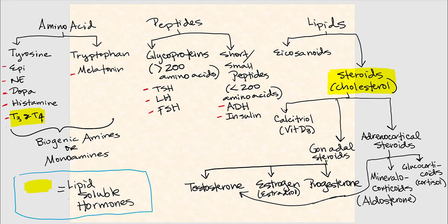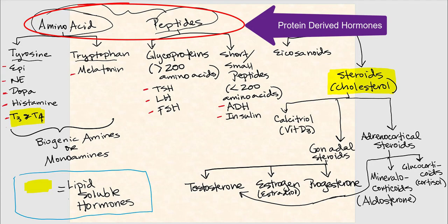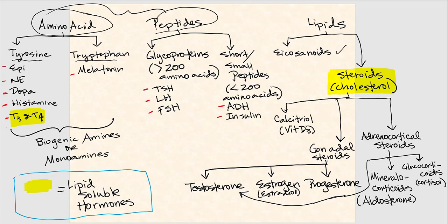I went ahead and broke down the types of hormones in a flowchart layout. We have amino acid derivatives — tyrosine and tryptophan. Melatonin is derived from tryptophan. T3 and T4 are triiodothyronine and tetraiodothyronine, also known as thyroxine. We have peptides — glycoproteins and short/small peptides — bracketed together as protein-derived hormones. And then we have lipid-derived hormones: eicosanoids and steroids, all derived from cholesterol.